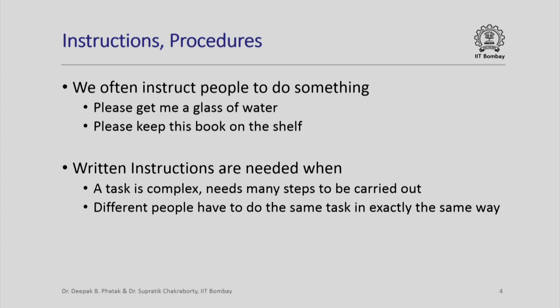Such is the way in which simple instructions are given; they are given verbally and they are followed automatically in the correct fashion. However, when a task is complex and needs many steps to be carried out, then verbal instructions are often inadequate. More importantly, when we have a complex task that different people have to do at different times at different places in exactly the same way, then obviously we cannot depend upon verbal instructions. This is the situation when we give written instructions. There are many examples of written instructions; cookbooks or recipes is one example, and instructions at the workplace is another example.